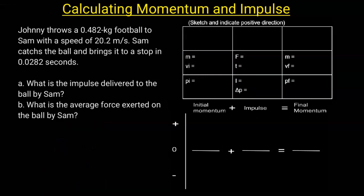Now we'll use this chart to organize the data from the question. Johnny throws a 0.482 kilogram football — I'm going to put that where the mass is. The mass is 0.482 kilogram with a speed of 20.2 meters per second, so it's thrown with a speed of 20.2 meters per second.